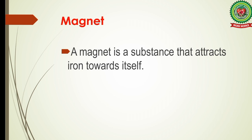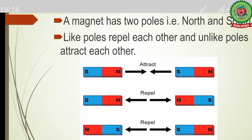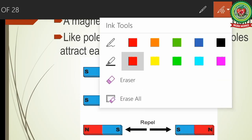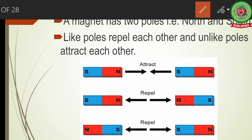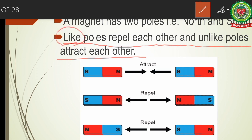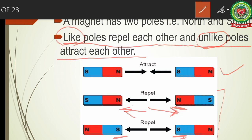A magnet is a substance that attracts iron towards itself. A magnet has two poles — north and south. Like poles repel each other and unlike poles attract each other. If we bring like poles — north-north or south-south — of two different magnets close to each other, they will repel each other. But if we bring unlike poles close to each other, they will attract each other. This is a property of magnets we will study in detail further.